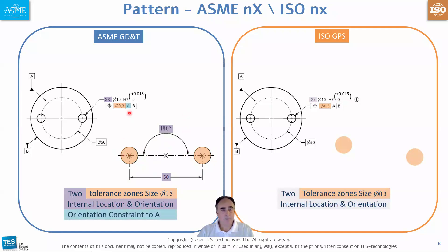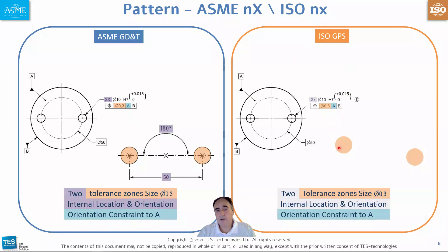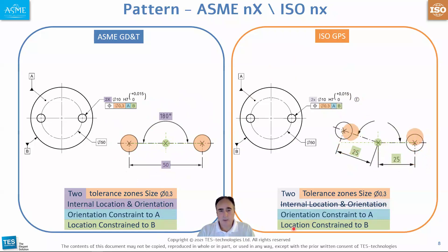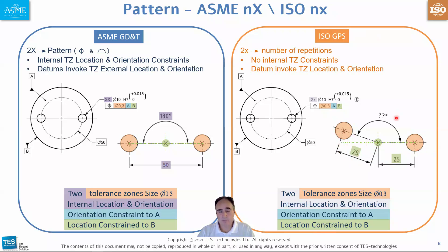Adding datum A in GD&T invokes an orientation constraint to A for the pattern. In ISO GPS, adding datum A says we have an orientation constraint to A applied to each of the tolerance zones individually. Adding datum B to GD&T orients and locates the pattern to B. Adding B to ISO GPS adds a location constraint to B for each tolerance zone individually — they need to maintain a radius of 25 millimeters, but there is no angular constraint between them because B does not arrest that degree of freedom.